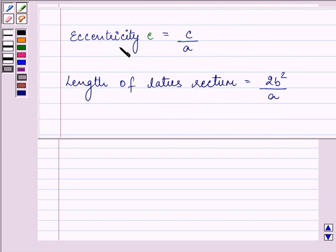Also, the eccentricity, that is e, is equal to c by a, and the length of the latus rectum is 2b square by a.